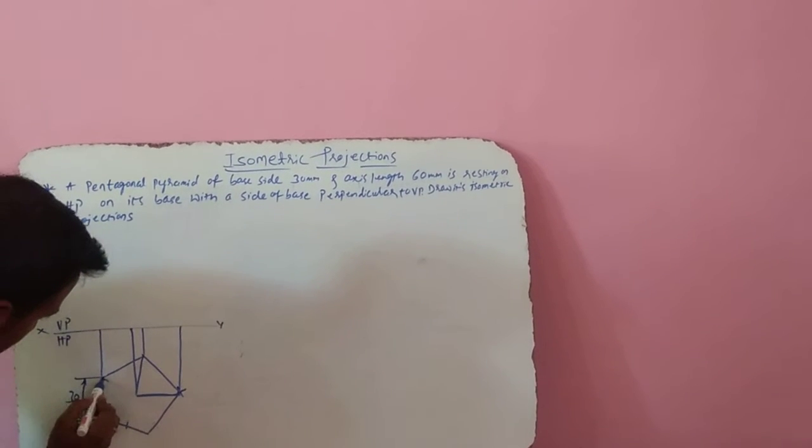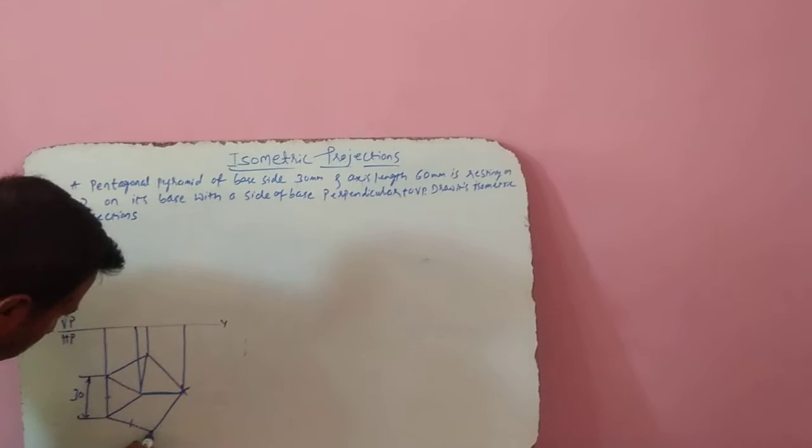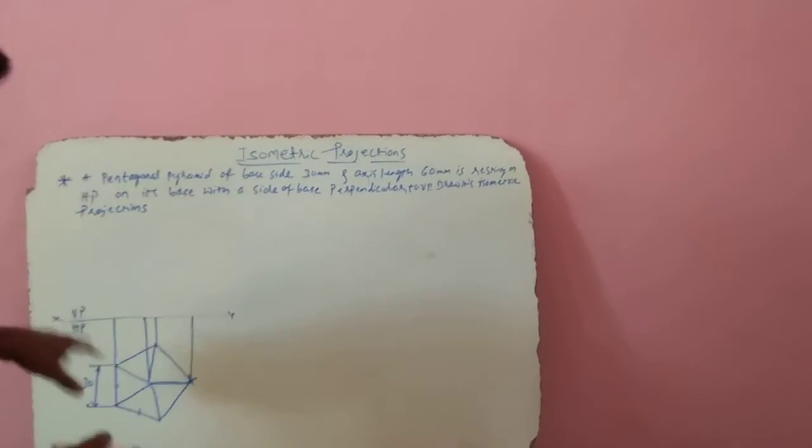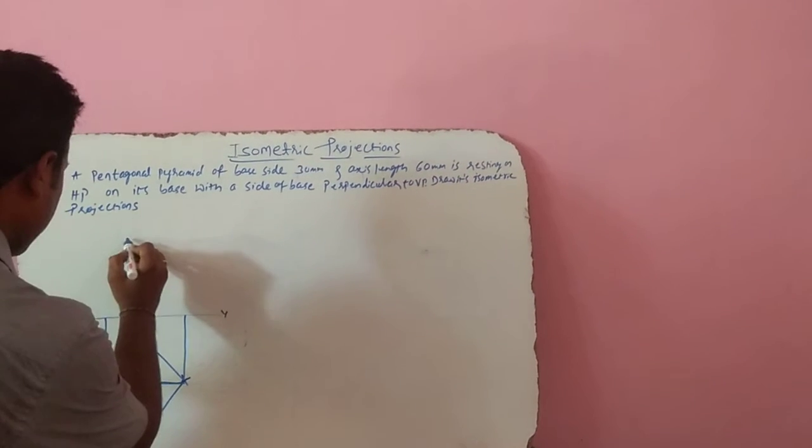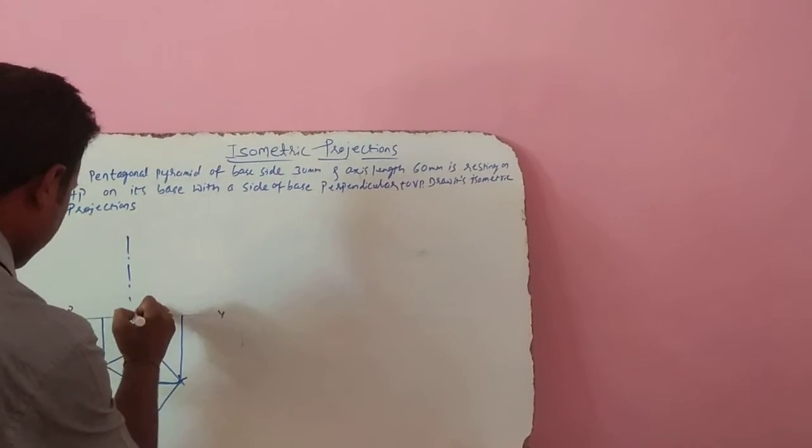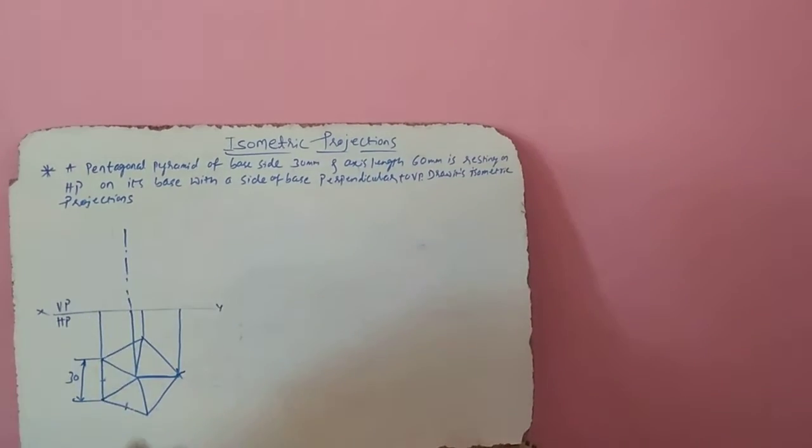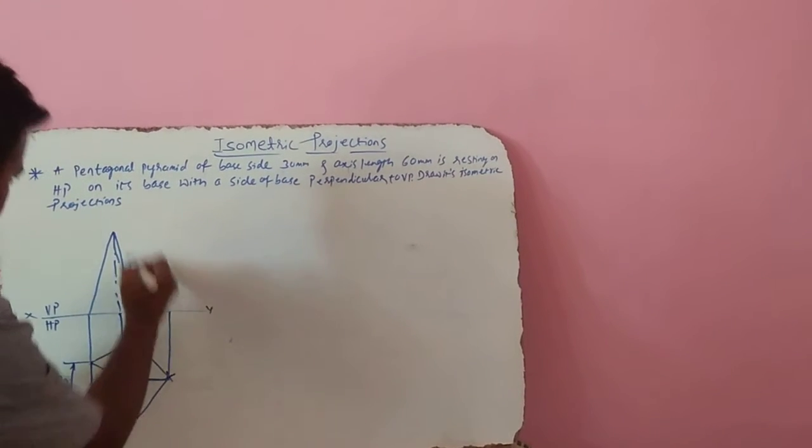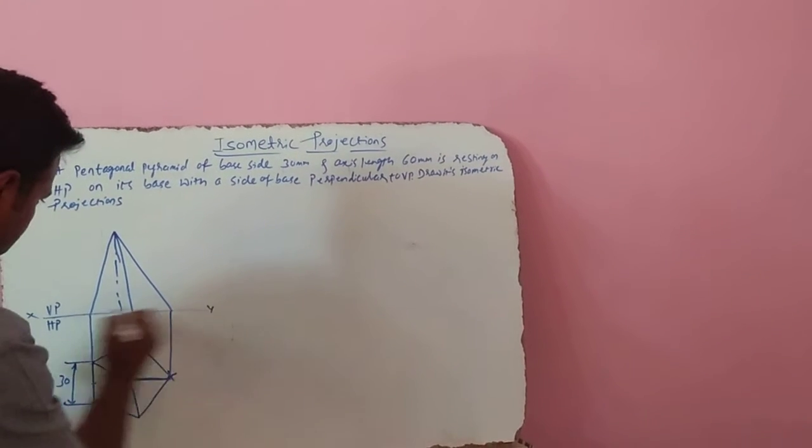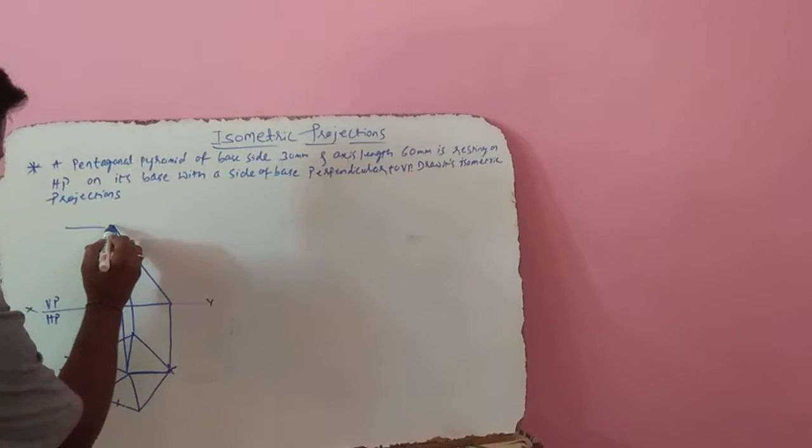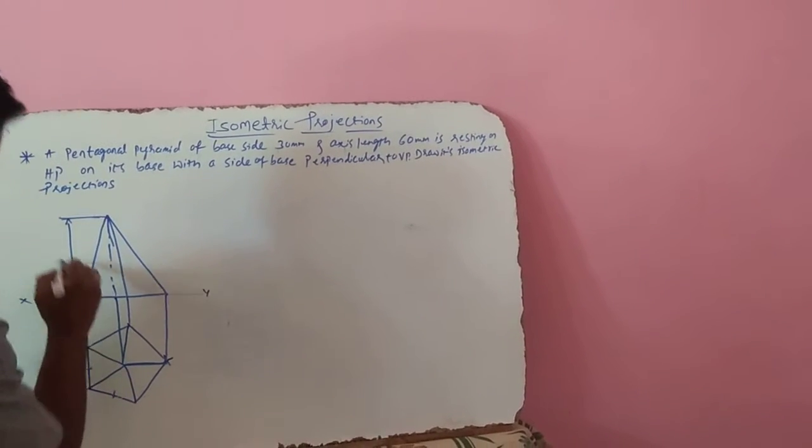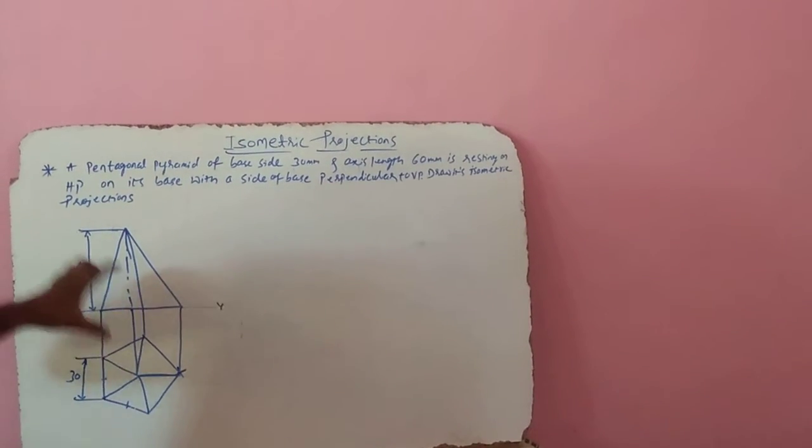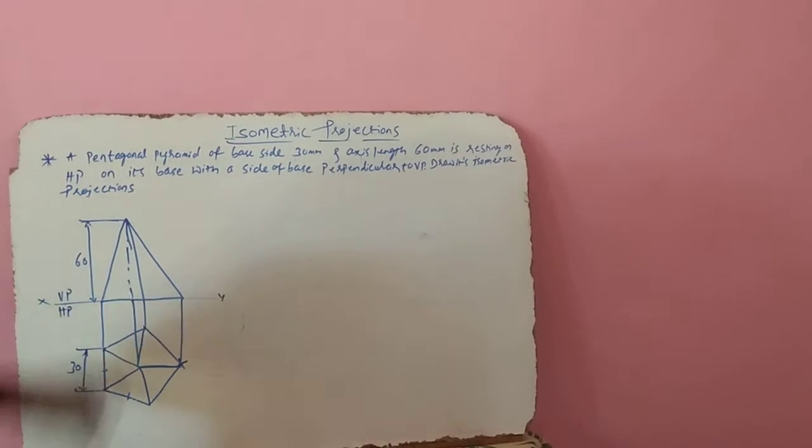From this corner to this midpoint. Now all the corners you need to join to the midpoint because it is a pyramid and you are looking from the top, all the sides are visible here. In the problem it is given that axis length is 60mm. Measure 60mm length and go back to this one. For this kind of problem, some marks will be allotted for orthographic projection also. That's why we need to construct this one.